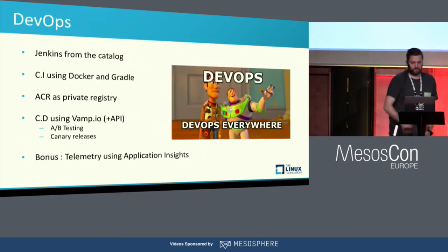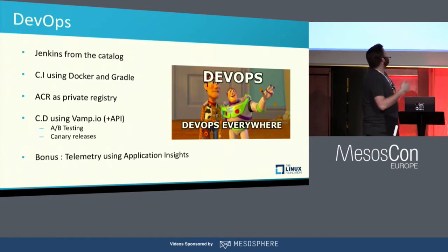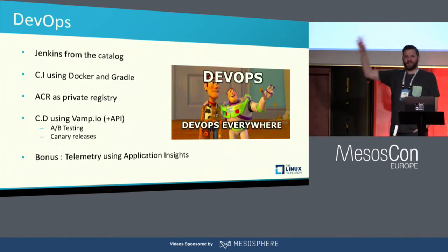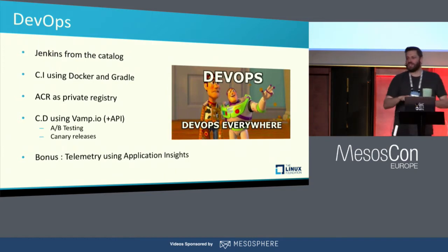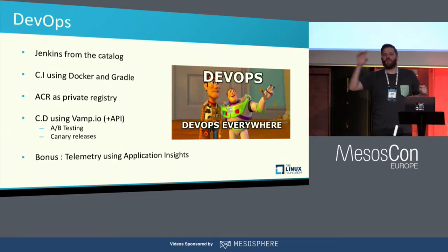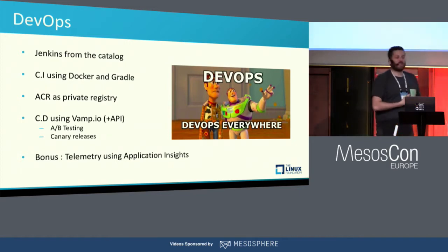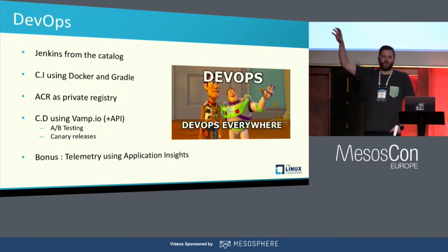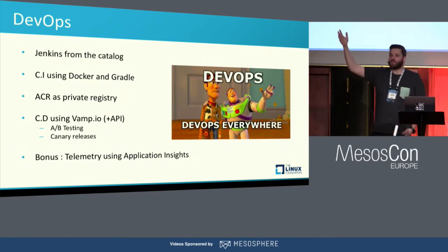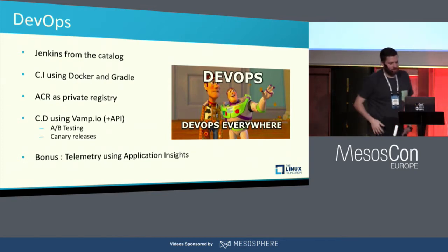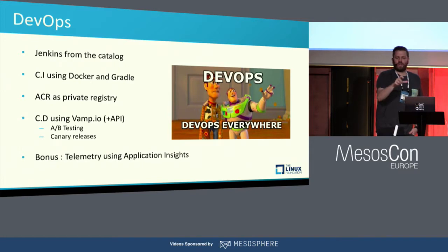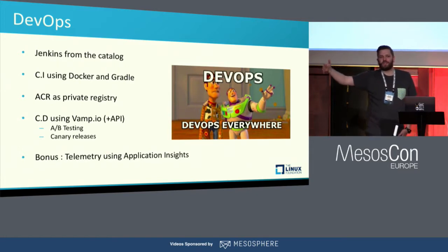We're going to do DevOps everywhere during this application. Obviously CI, which is the base of DevOps practices — continuously integrating new features, making sure it builds and works all the time. Then I'm putting something on Azure called ACR, Azure Container Registry. It's basically the ability to have a private registry for Docker images on Azure. It's really simple — a few clicks and you have it. At the beginning I'm going to use GitHub, and if we have time we can implement that piece.